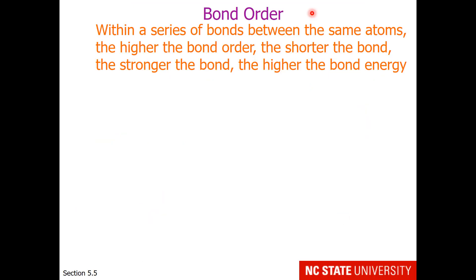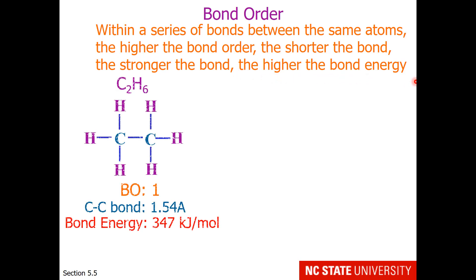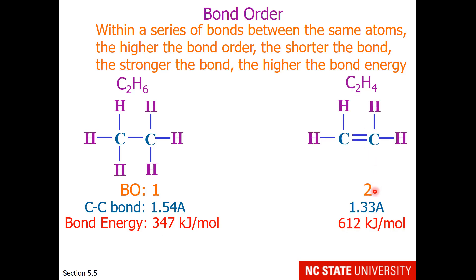A reminder of bond order and how it impacts changes between atoms in a molecule: within a series of bonds between the same atoms, the higher the bond order, the shorter the bond, the stronger the bond, and the higher the bond energy. The bond order of a carbon-carbon single bond has been presented before as bond order 1, with 1.54 angstroms of distance between the two carbon nuclei and a bond energy of 347 kilojoules per mole. A carbon-carbon double bond has a shorter bond length of 1.33 angstroms and a higher bond energy of 612 kilojoules per mole — not double, but higher.